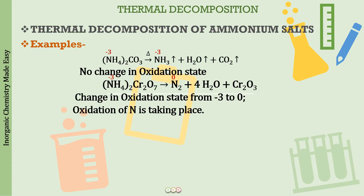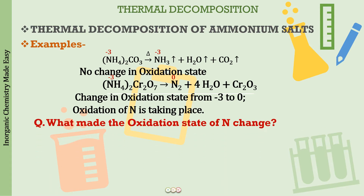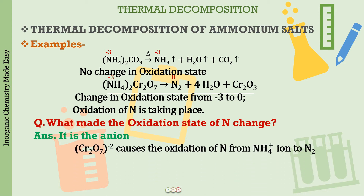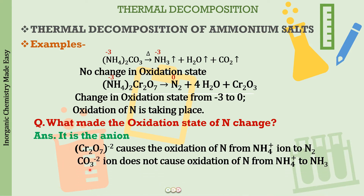So what is the thing causing the oxidation of nitrogen? It will be the anion in the ammonium salt that changes the oxidation state. For example, Cr2O7 2− is causing the oxidation of nitrogen from ammonium salt to nitrogen gas. Similarly, carbonate ion — if you look at its oxidation state — does not cause a change. So we can think about the anions: if we understand the anions, we can predict what products will form.